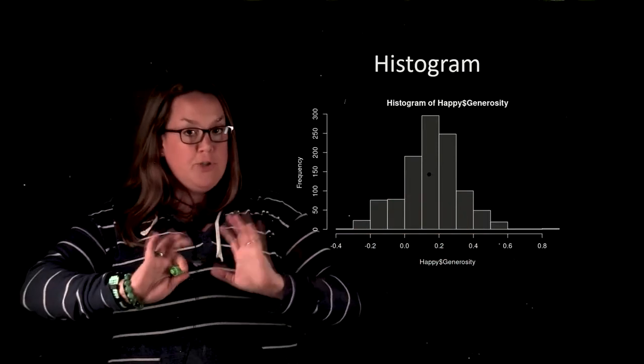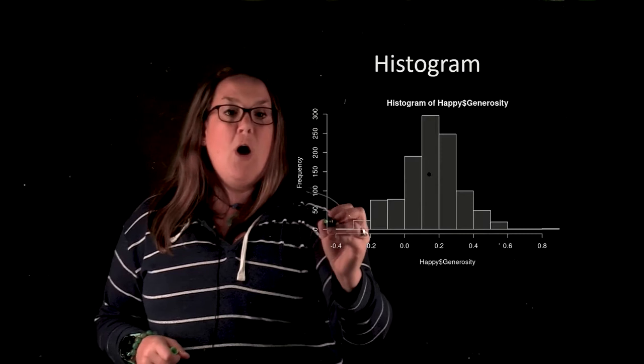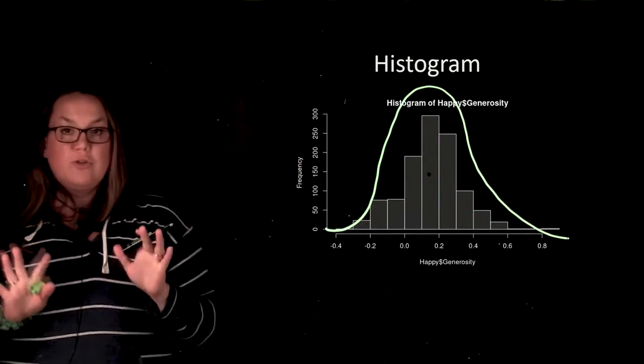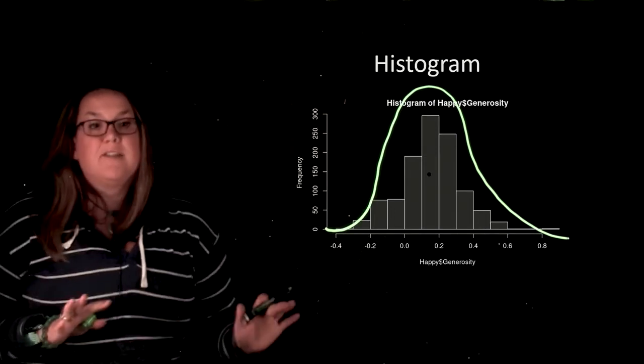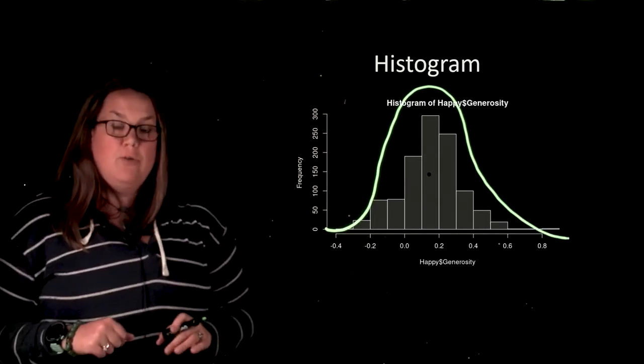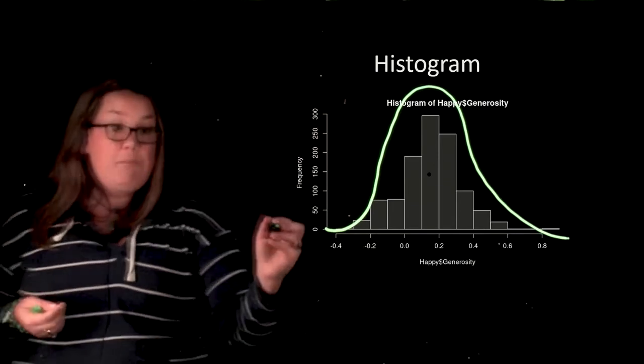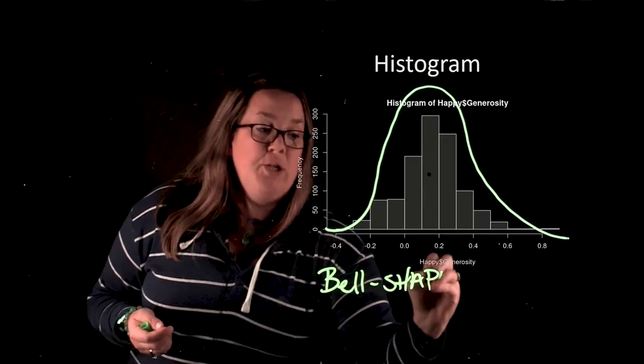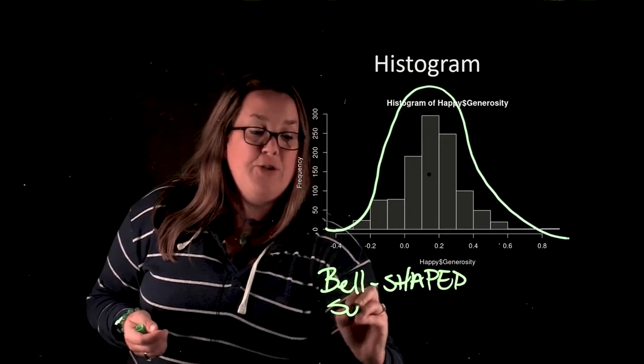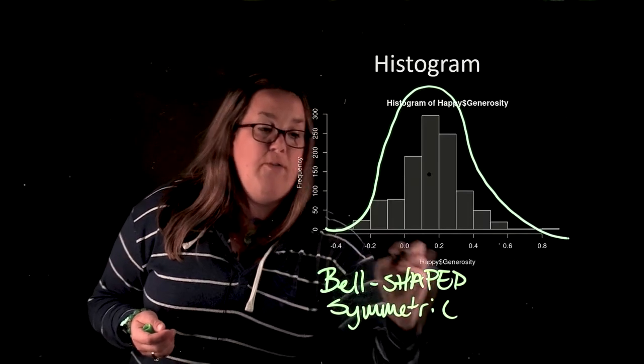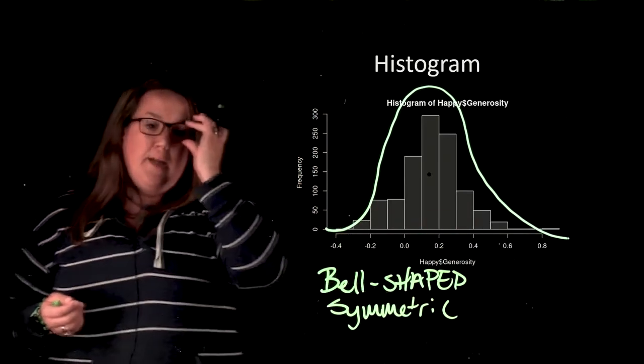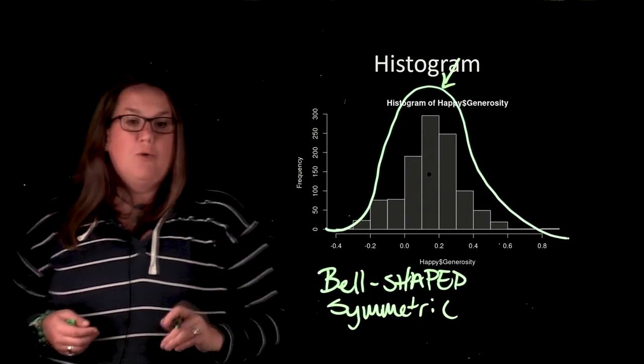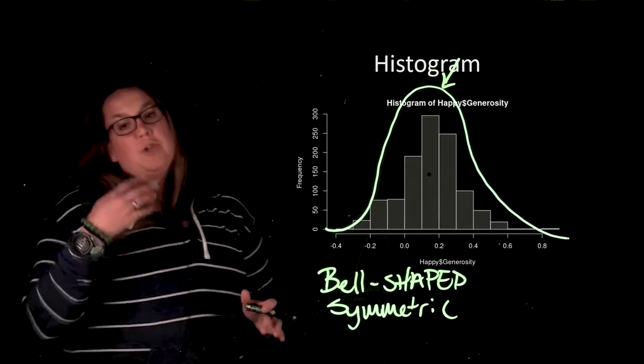Now, what I usually do is I like to draw a curve around my distribution. You have to do it gently, you want to do an approximate. What does that shape look like to you? I would describe that as kind of looking like a bell. We would describe this as being a bell-shaped distribution because it's symmetric. The shape of the curve is equal on both sides, and it only has one prominent peak. We would describe this as being bell-shaped and symmetric.